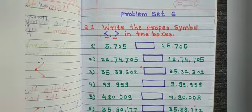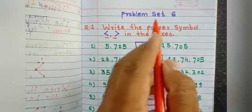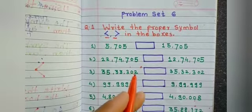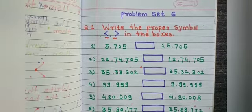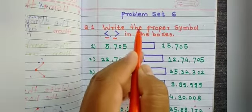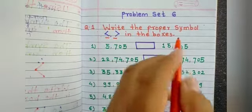Hello students. Welcome in our math class. Today we are doing problem set 6. Compare between two numbers. Which is bigger number and which is smaller number. Here is the question number 1. Write the proper symbol greater than or less than in boxes.